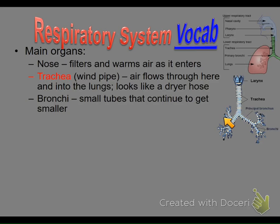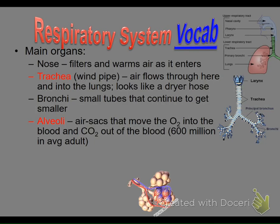Alveoli — not ravioli, alveoli. The bronchi are the smaller tubes. So: big tube that looks like a dryer hose — that's your trachea. Then the bronchi. And then the alveoli. The alveoli are these air sacs that move oxygen into the blood and carbon dioxide from the blood.